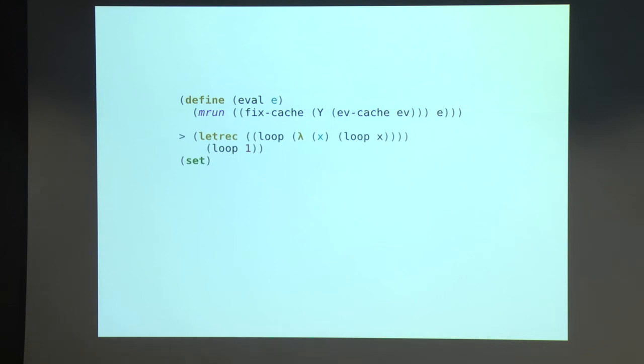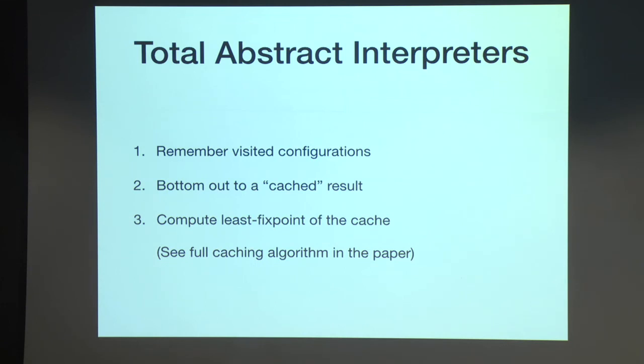So for example, just that ev evaluator I showed you at the beginning, composed together in this way. If you run a looping computation, you're going to get the empty set, meaning it doesn't ever return, which is correct. And then you can run things like factorial, and it'll be sound. So this is the whole approach. Remember, visit configurations, bottom out to a cached result, and then compute the least fixed point of the cache, and there's a full caching algorithm in the paper.